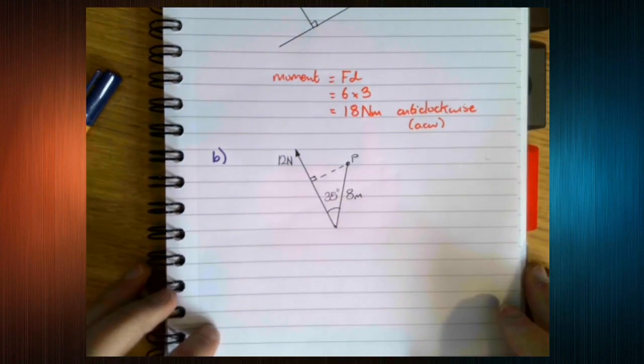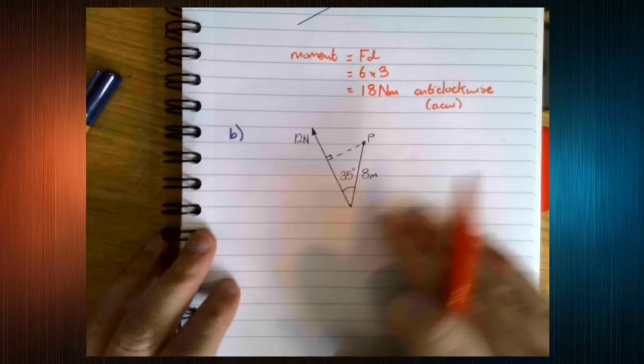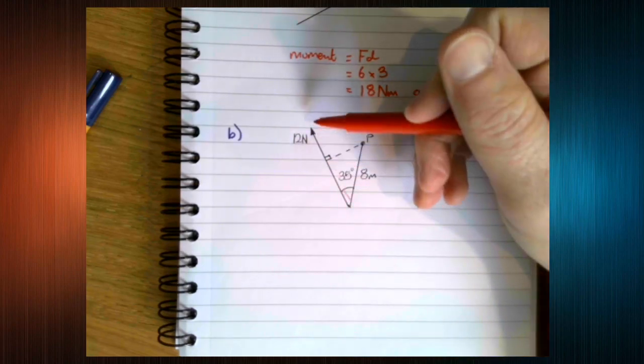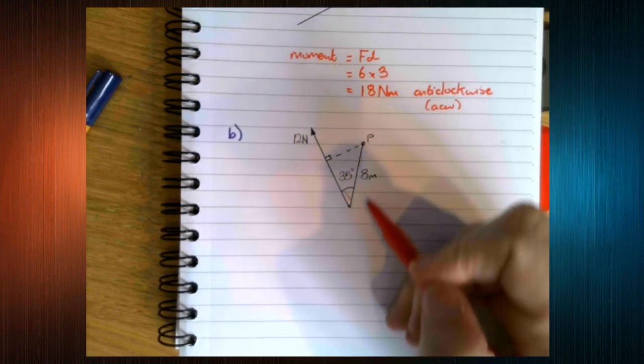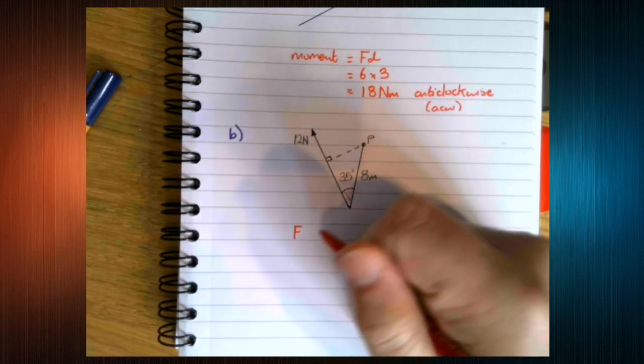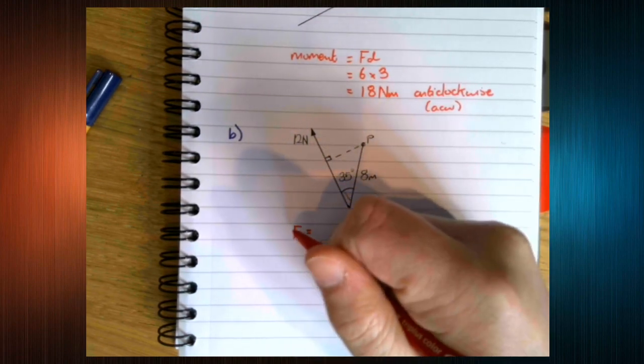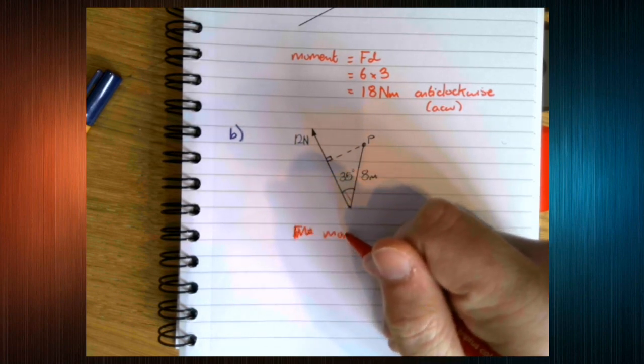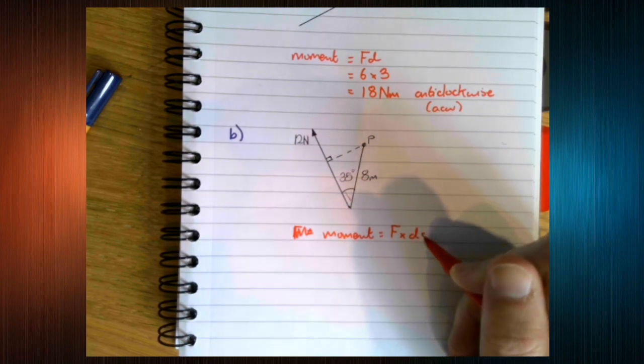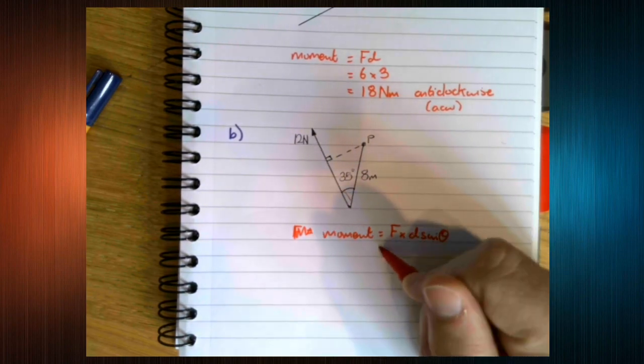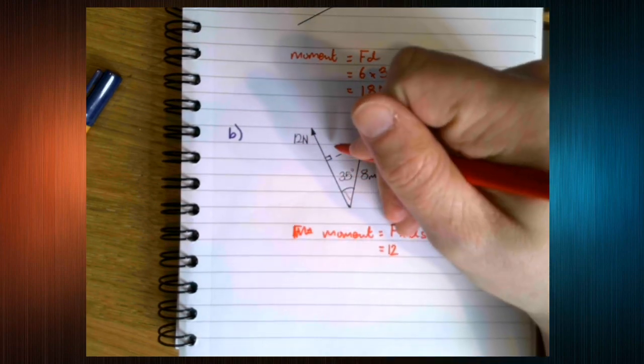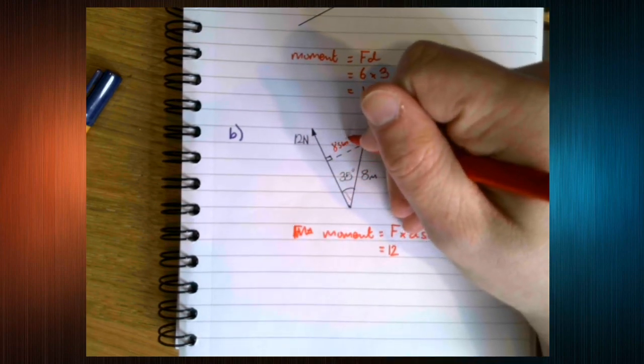You can generally get away with putting ACW for anti-clockwise. I tend to write it out. So let's look at a second example here of this more angular type. So we've got our force, 12 newtons here. We've got our distance of 8 meters. So in this case, because it's at an angle, we're going to have moment is force times d sine theta.